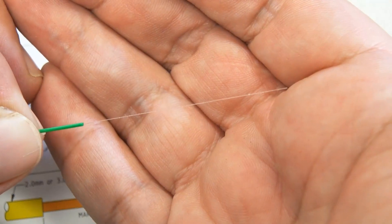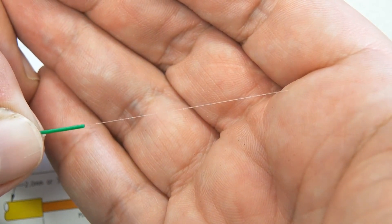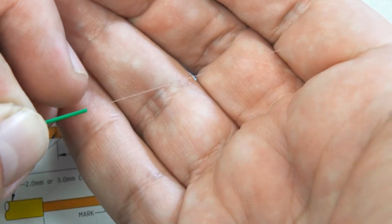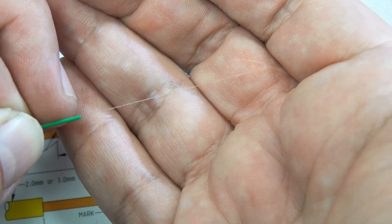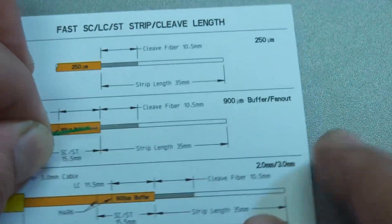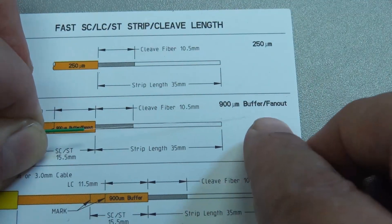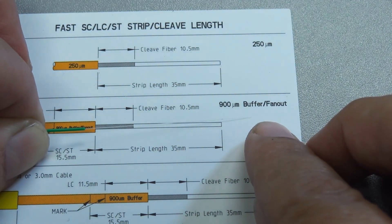I've stripped the 250 size off all the way to where the 900 micron size fan out kit starts. From there to there, we now have something a little over 35, which is fine.